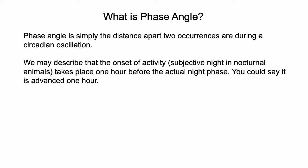Phase angle is simply how far apart two occurrences are within one circadian oscillation. They could be anything like how far apart the onset of activity is from the onset of the actual dark period. We could describe the distance between these two things by simply just using time, how far apart they are in time. For example, we may describe that the onset of activity, subjective night in nocturnal animals, takes place one hour before the actual night phase. You could say it is advanced one hour.